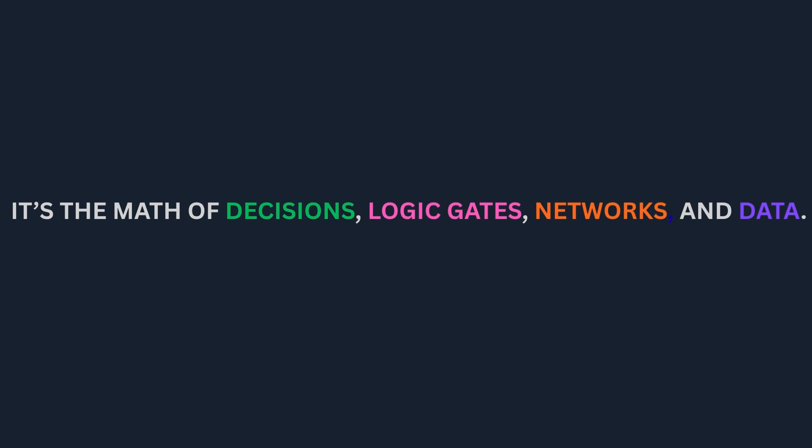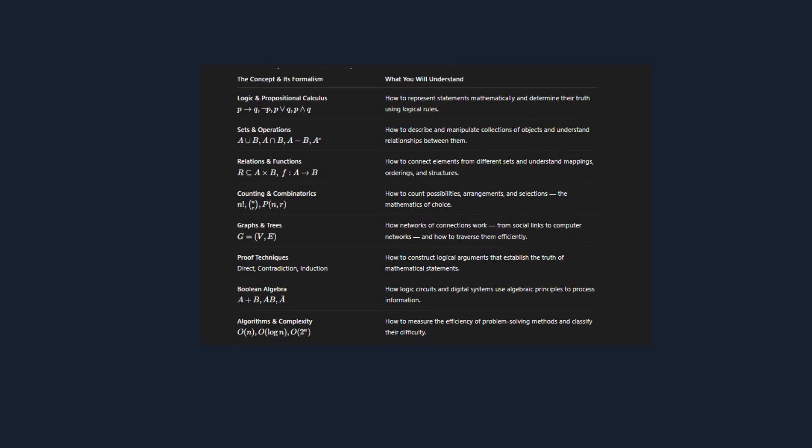It's the math of decisions, logic gates, networks, and data. In the next 20 minutes we'll build your complete mental toolkit. We'll start with logic, the art of reasoning, then move to sets, the language of belonging. We'll connect them through functions and relations, count possibilities with combinatorics, and travel through networks in graph theory. We'll test truth with proofs, turn logic into motion with algorithms, and uncover the hidden structure of numbers in number theory. And the best part: you won't memorize any of it. You'll build it piece by piece from one simple idea—that every system, no matter how complex, begins with something discrete. No magic, just mechanics.